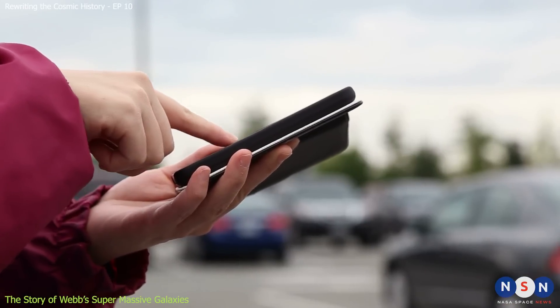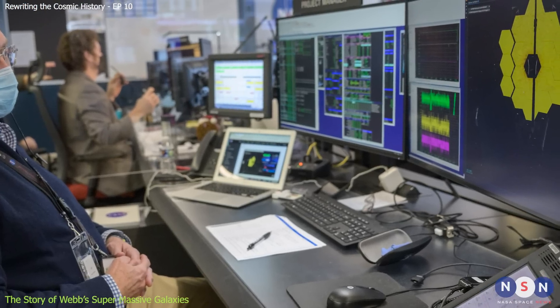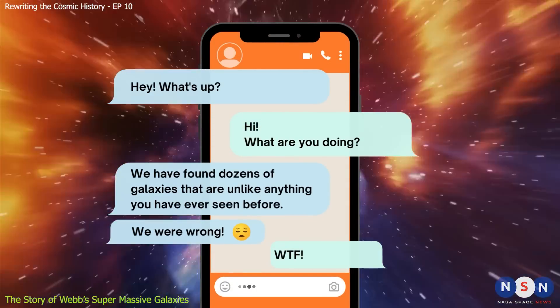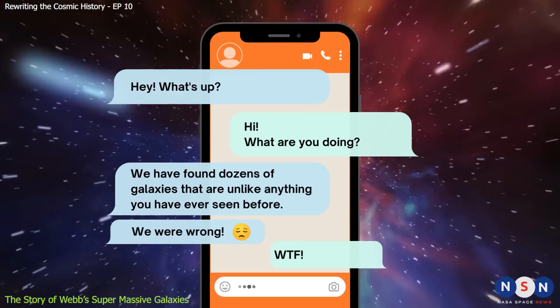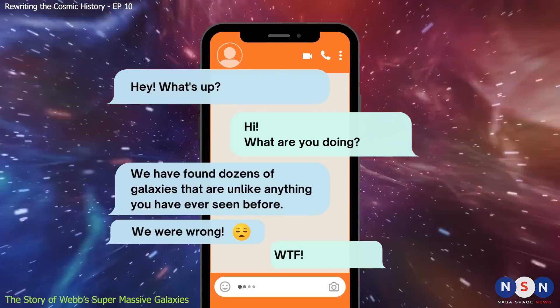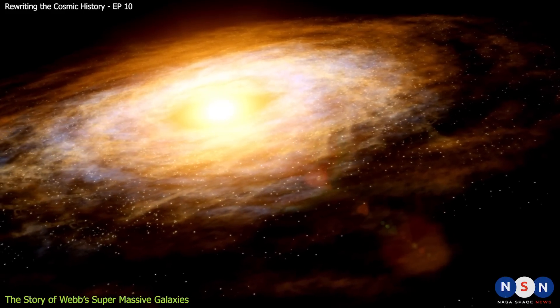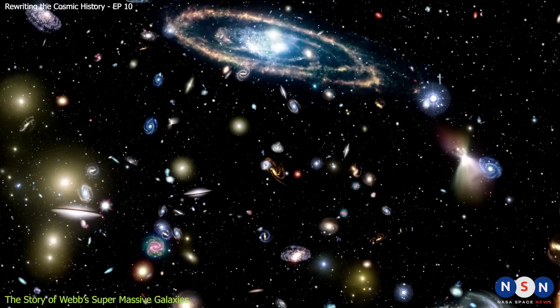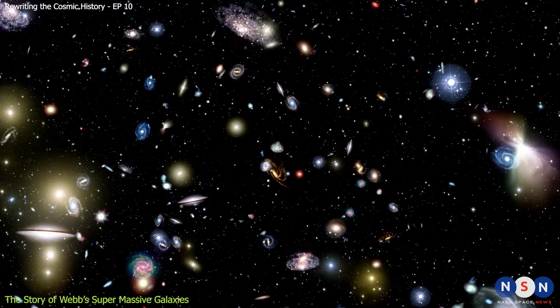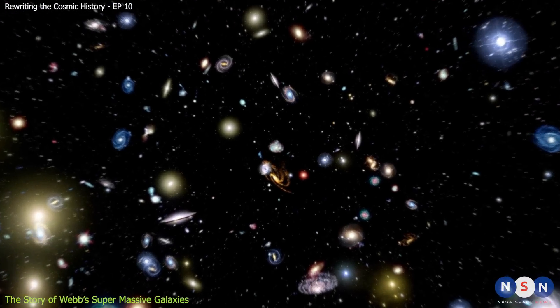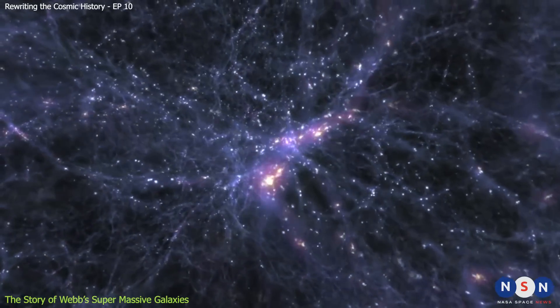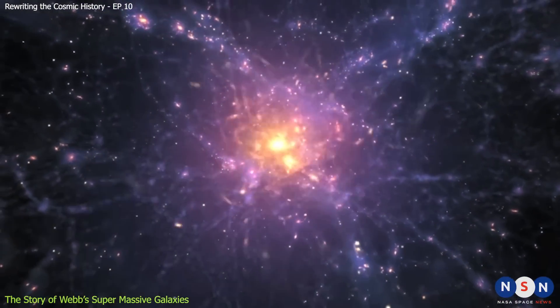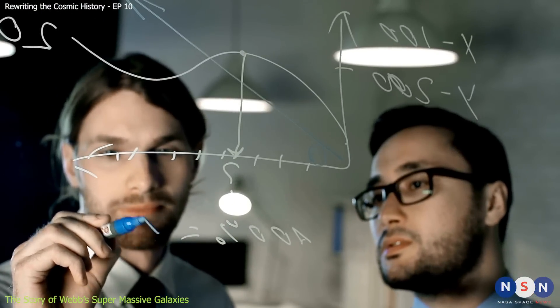But one day you receive a message from your colleagues who are working with the James Webb Space Telescope. They tell you that they have made a stunning discovery. They have found dozens of galaxies that are unlike anything you have ever seen before. These galaxies are so massive and bright that they dwarf any galaxy you have ever observed. These galaxies are so old that they existed when the universe was only a fraction of its current age. These galaxies are so unexpected that they challenge everything you thought you knew about galaxy formation and evolution. How do you react? How do you explain these galaxies? How do you reconcile them with your model?